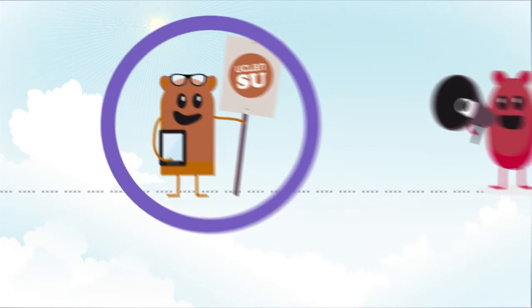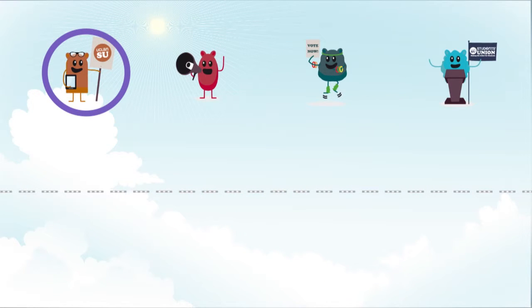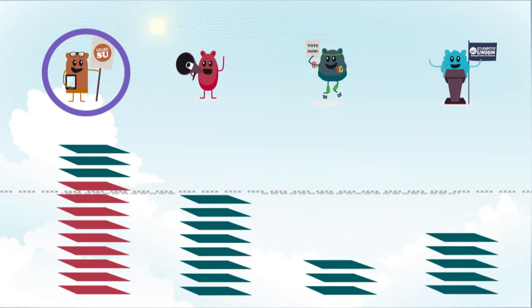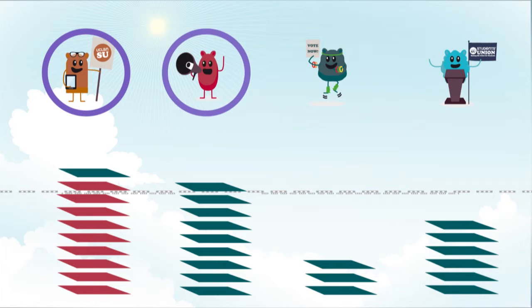If Ben gets more votes than he needs to be elected, his voters' second choices are now in play. In this example most of these extra votes go to Lucy and she too gets elected.